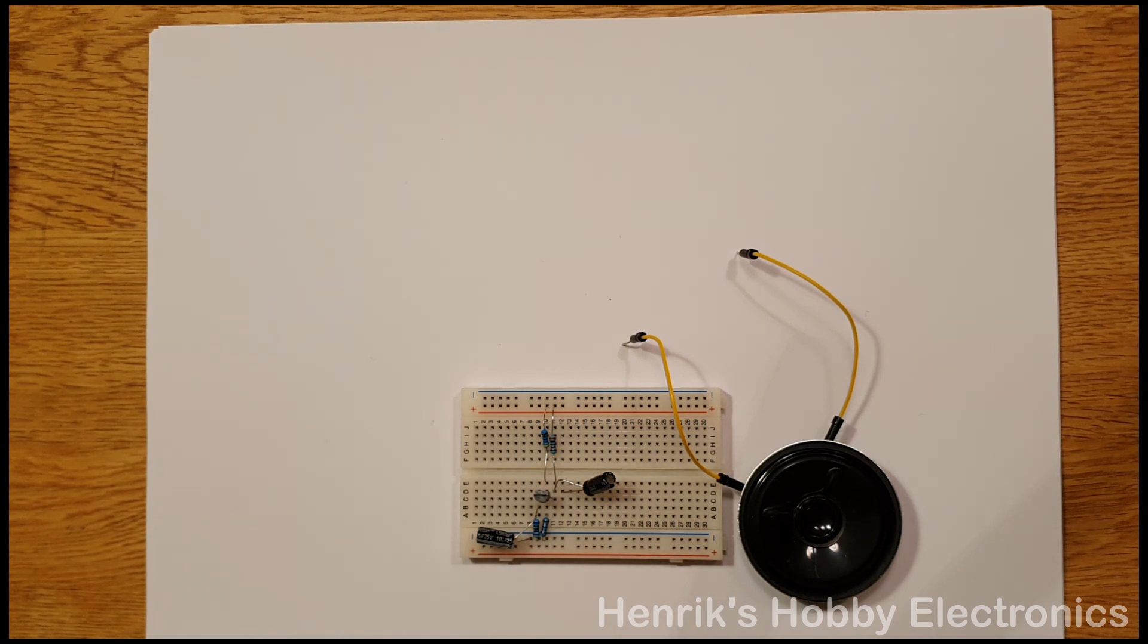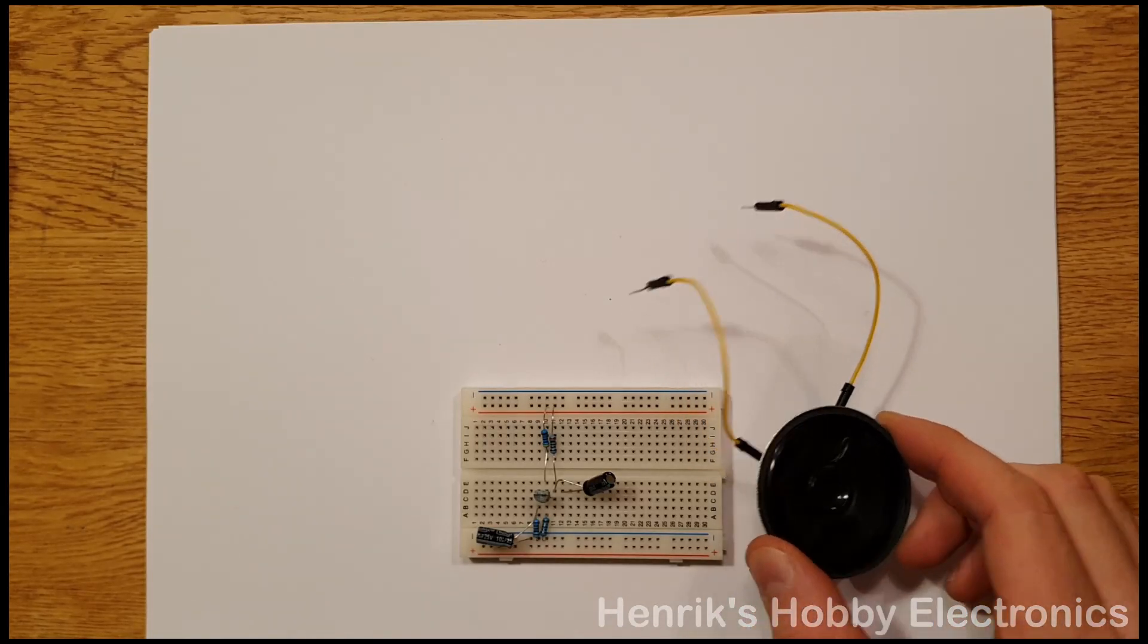Hello! Today I will explain how the common emitter amplifier works on a level of detail so that it should be possible for you to make your own on a breadboard like this in order to power an 8 ohm loudspeaker like this one.